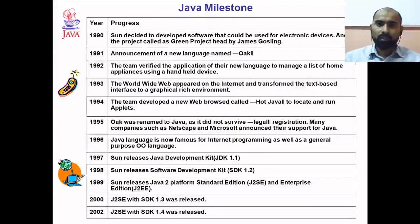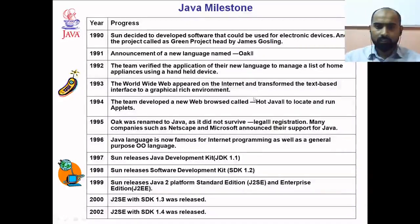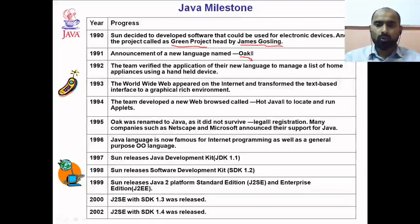Now let's look at the Java milestones. We have a column for years and a column showing the progress of Java. In 1990, Sun decided to develop software for electronic devices and started the Green Project, headed by James Gosling. In 1991, the announcement of a new language called Oak was made — the language was developed and announced that year.